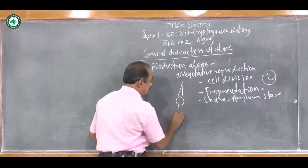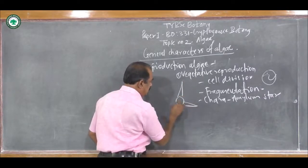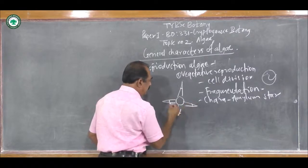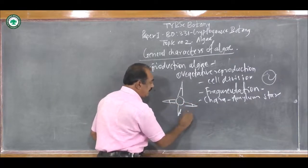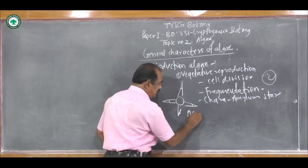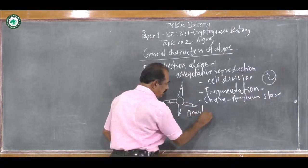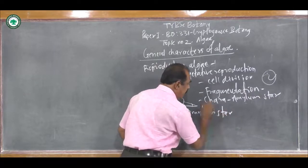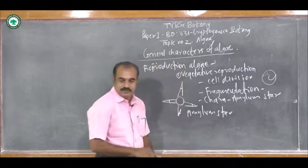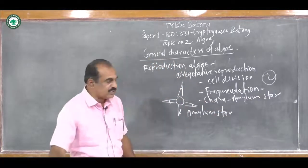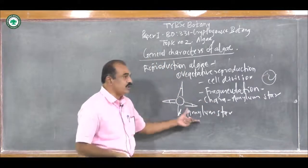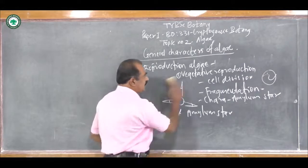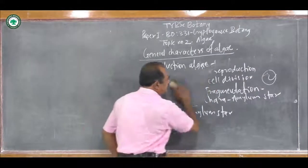This is the Amylum star, and they are found in the Chara plant. These are the specially vegetative reproductive structures. So this is about the Vegetative Reproduction.